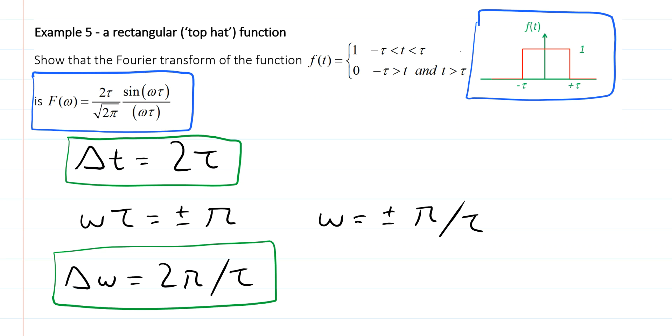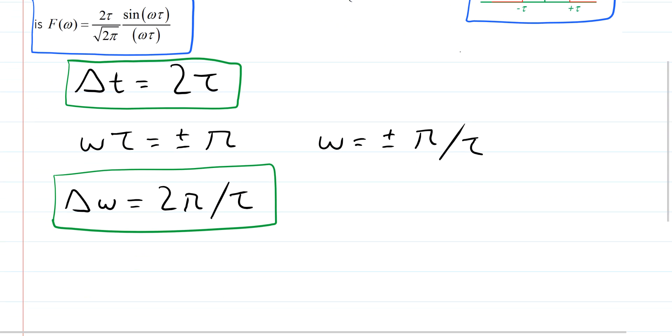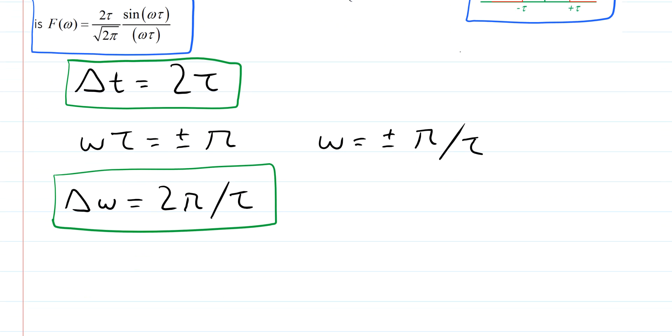Delta t is proportional to tau. Delta omega is inversely proportional to tau. Another way of writing this is to write the product of the two widths, delta t times delta omega.